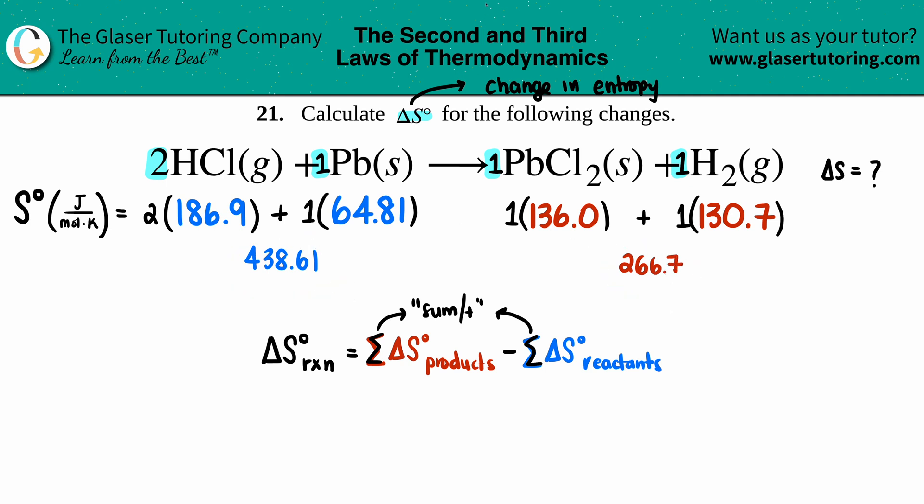Now put these into the formula. My delta S° for the entire reaction is 266.7 minus 438.61. My delta S° is actually going to be a negative value—that's pretty interesting.